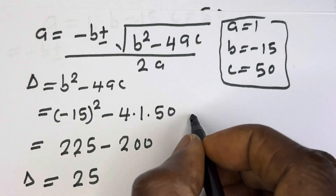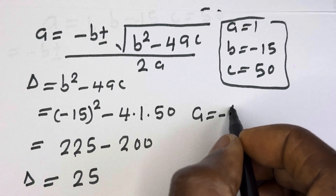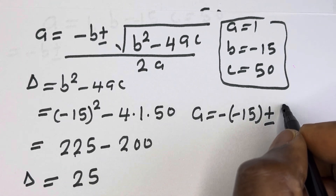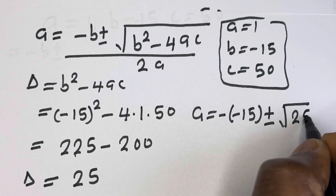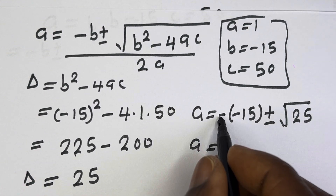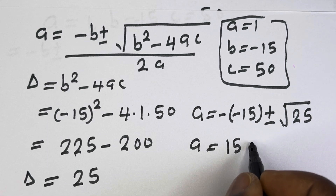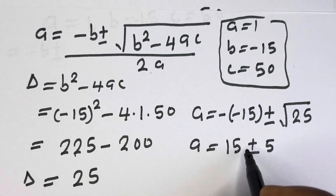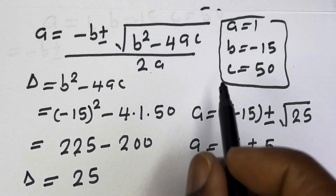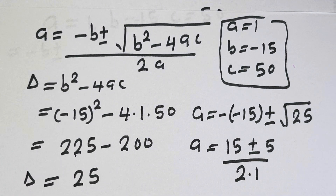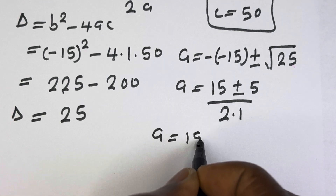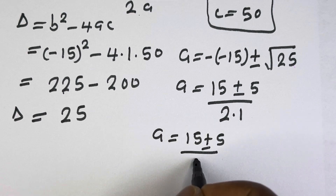Then the equation becomes A equals minus (minus 15) plus or minus the square root of 25. So A equals 15 plus or minus 5. Remember we have 2A in the denominator, and A equals 1, so we divide by 2 times 1, which is 2. Then A equals 15 plus or minus 5 over 2.